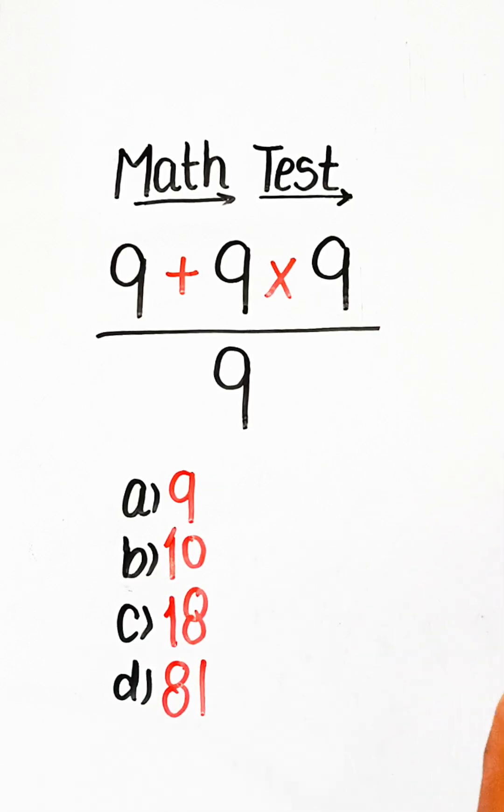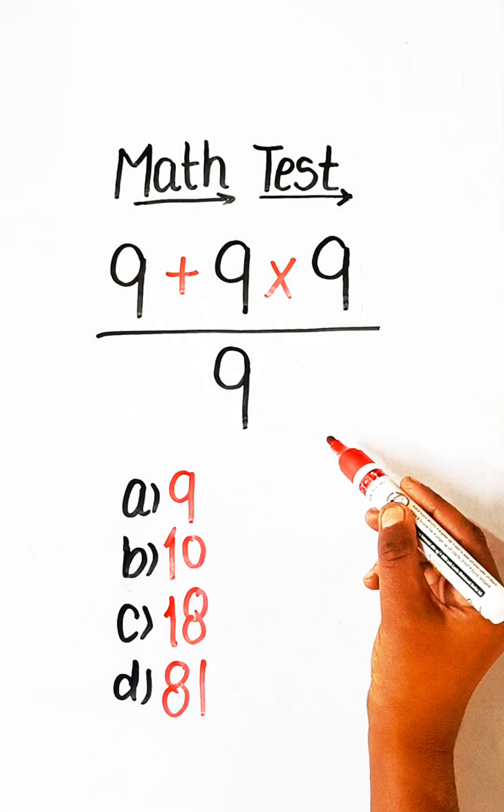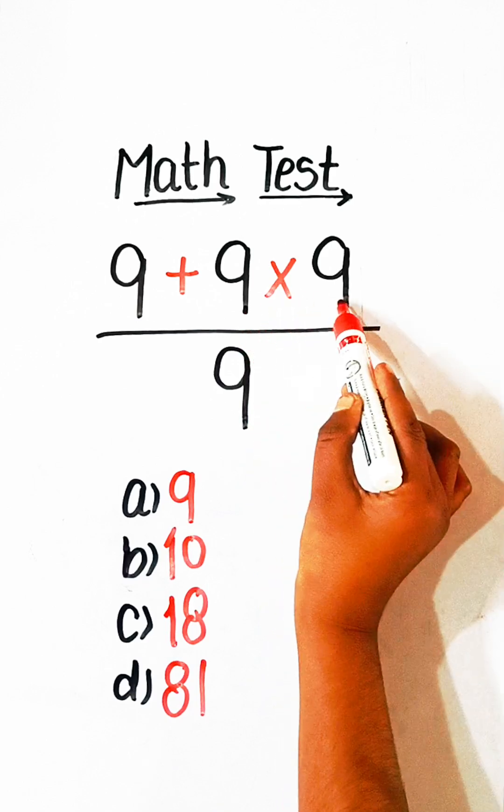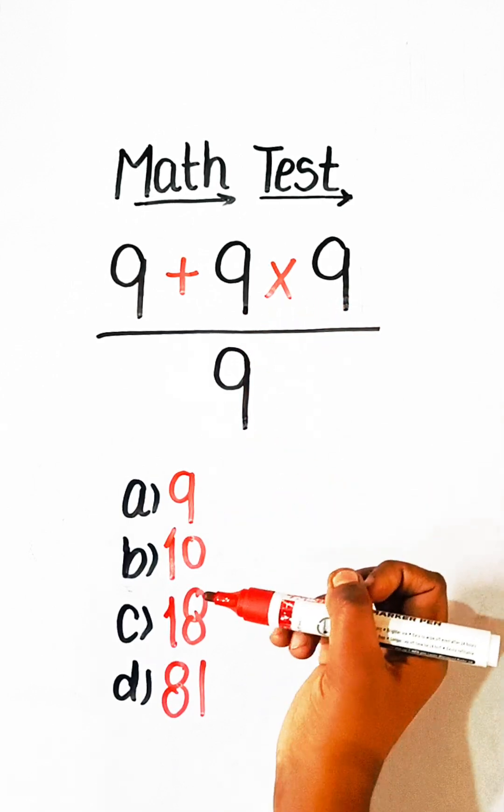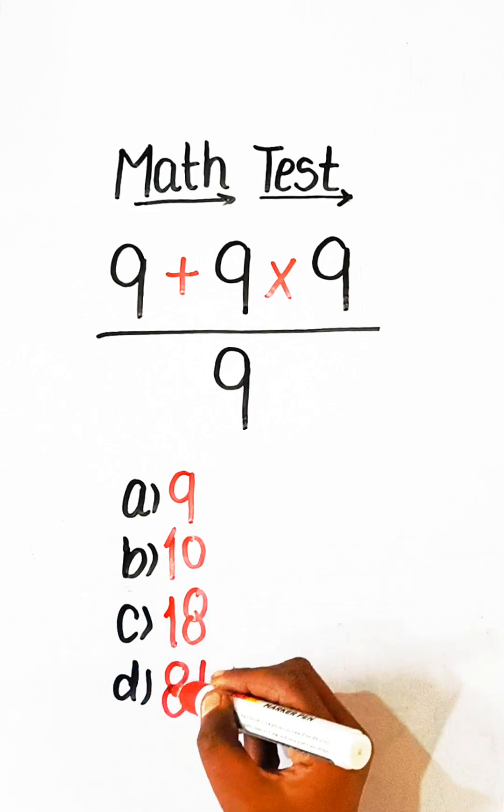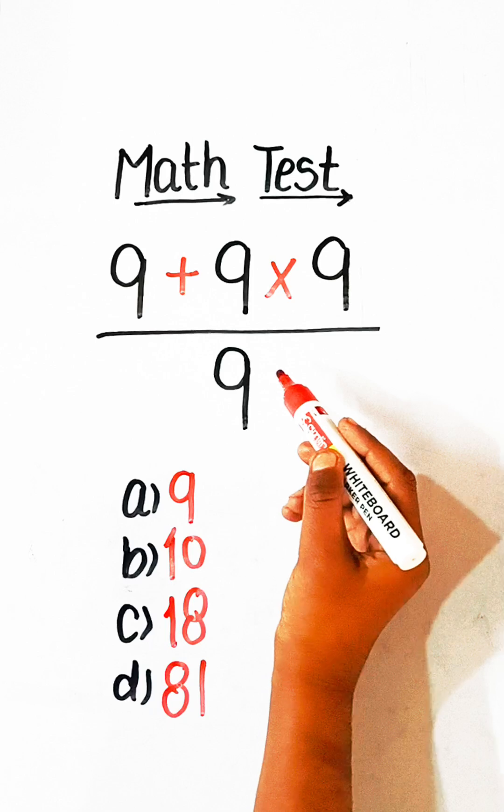Hello everyone, in this video we will solve this basic math equation: 9 + 9 × 9 ÷ 9 equals what? Option A: 9, Option B: 10, Option C: 18, Option D: 81. So let's solve this.